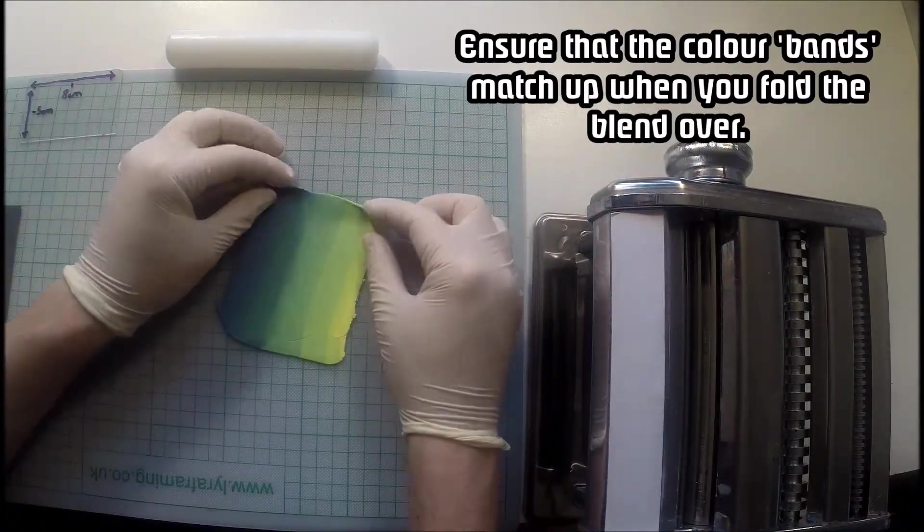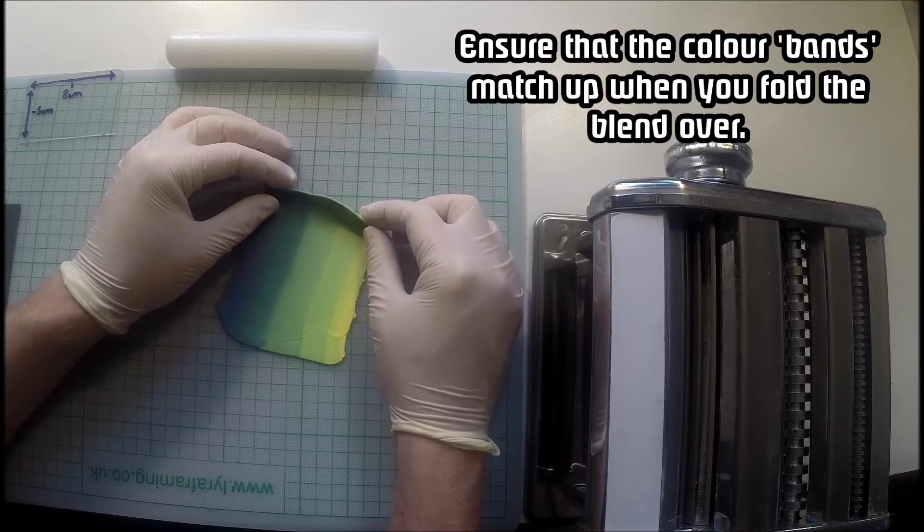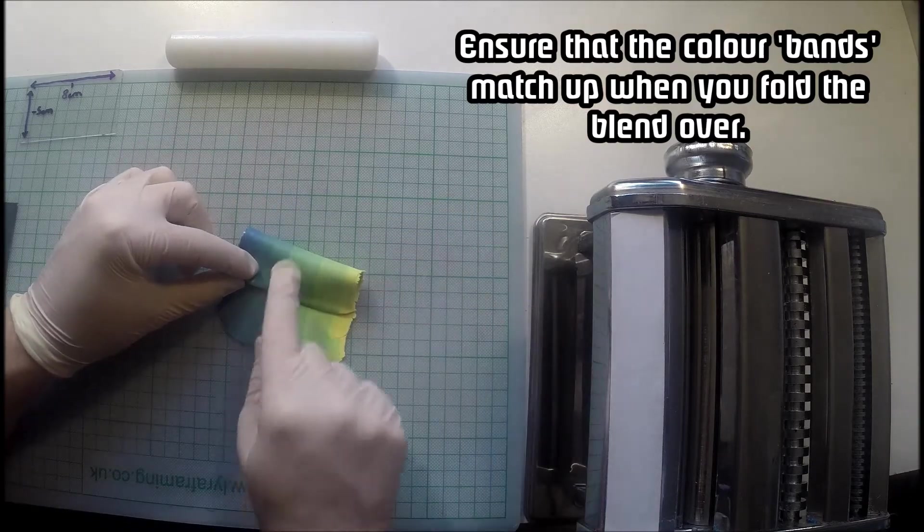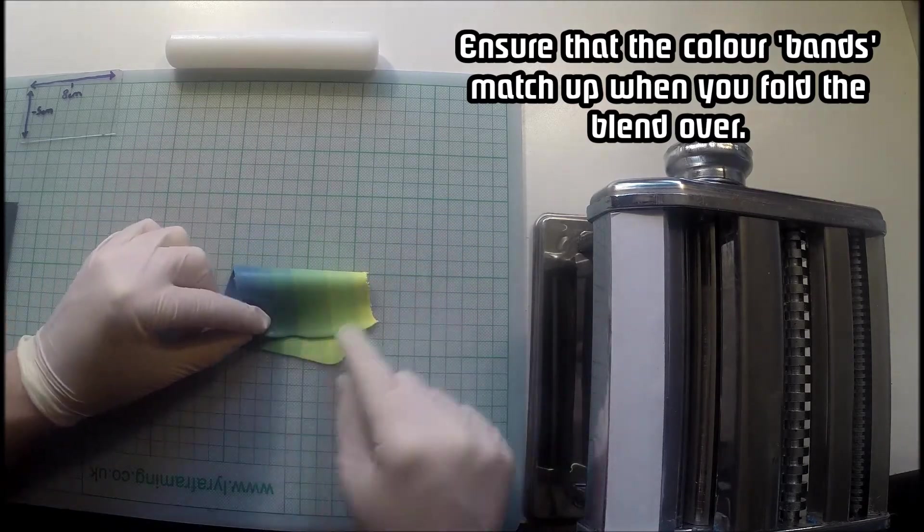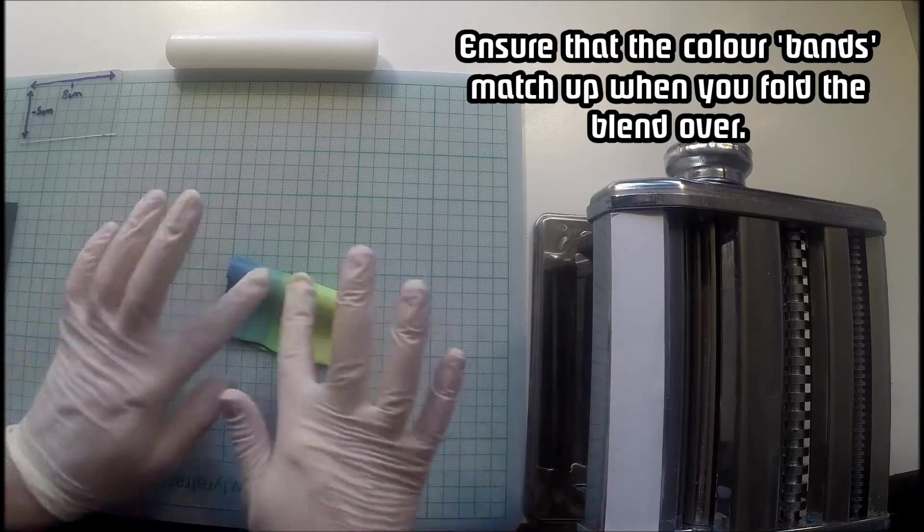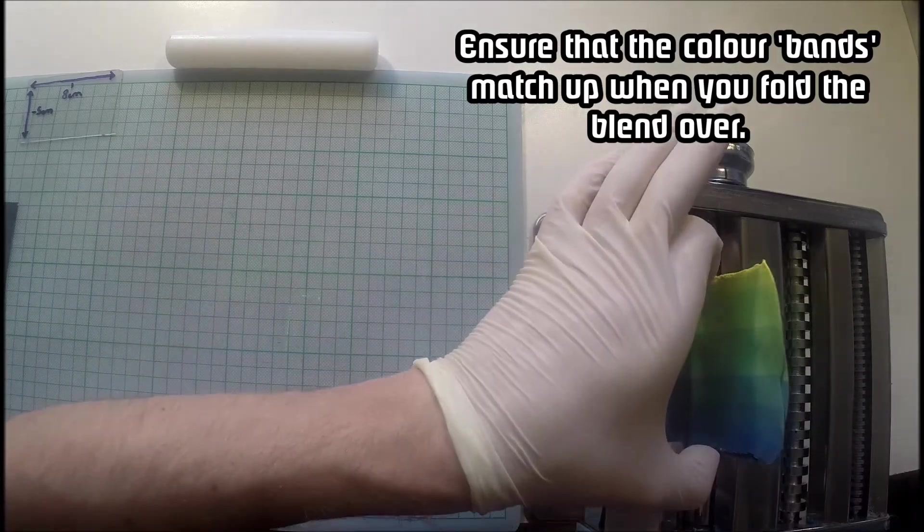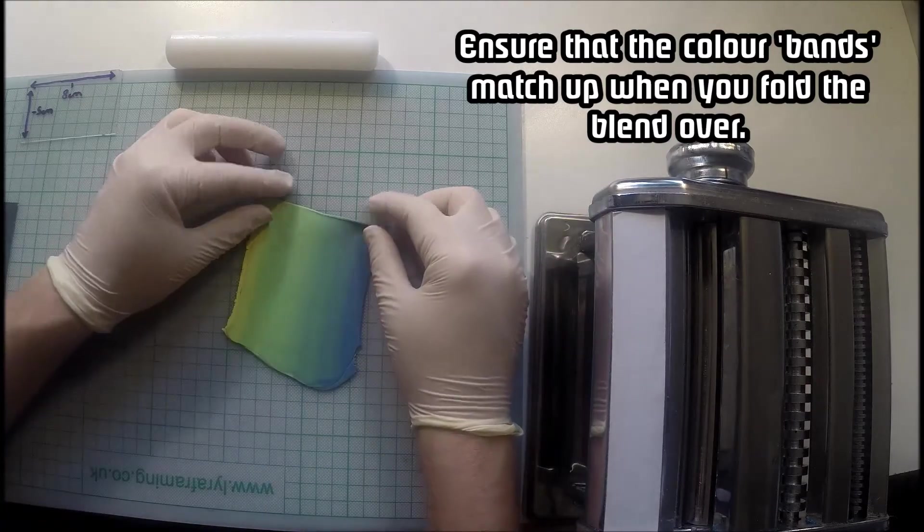The other thing to mention is that when you're doing Skinner Blends you'll notice as you progress it creates these bands of color and you want those bands to match up when you fold it. You want them to be straight on so that the colors are blended equally.